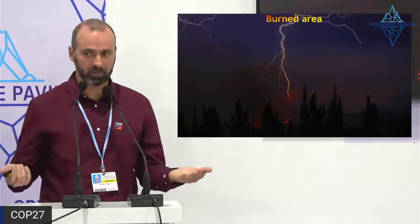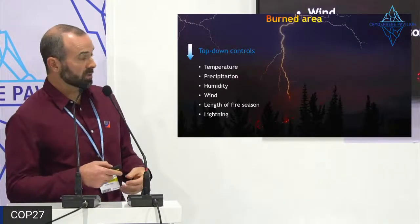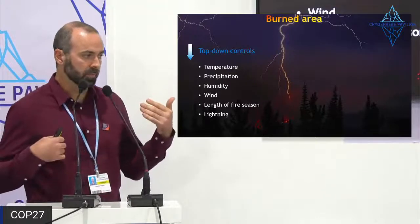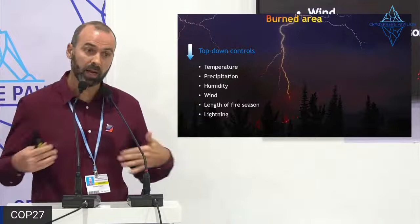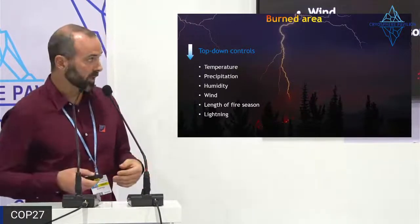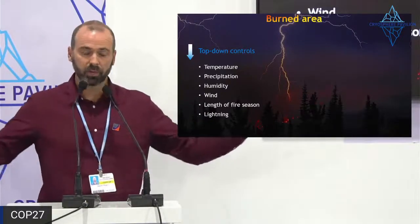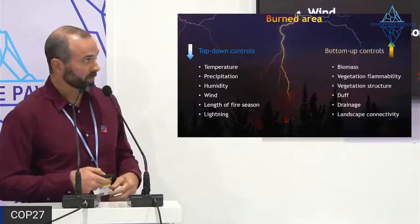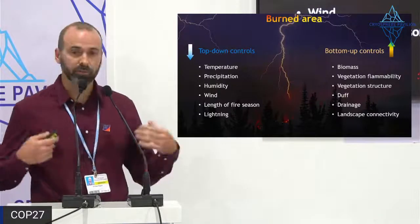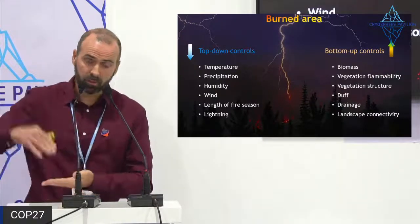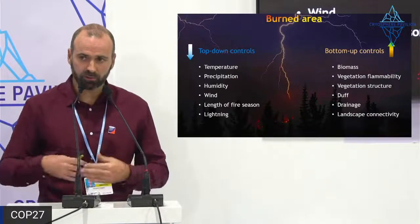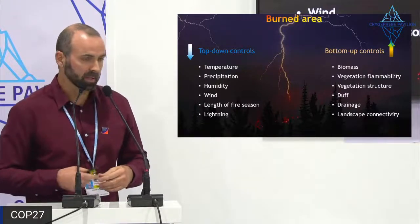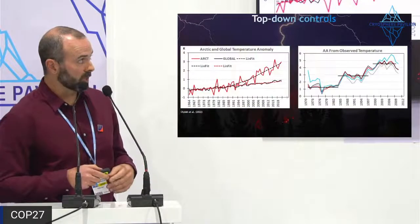The top-down controls driving wildfire in permafrost regions are temperature, precipitation, humidity, and wind. These govern how dry the fuels — vegetation and soil — are, how likely fire is to spread, and the length of the fire season. Climate is also affecting lightning ignitions: with more energy in the atmosphere we're seeing more lightning. On the bottom-up side: biomass, flammability, vegetation structure both vertically and horizontally, duff — soil organic matter fiber layers — drainage, and landscape connectivity.